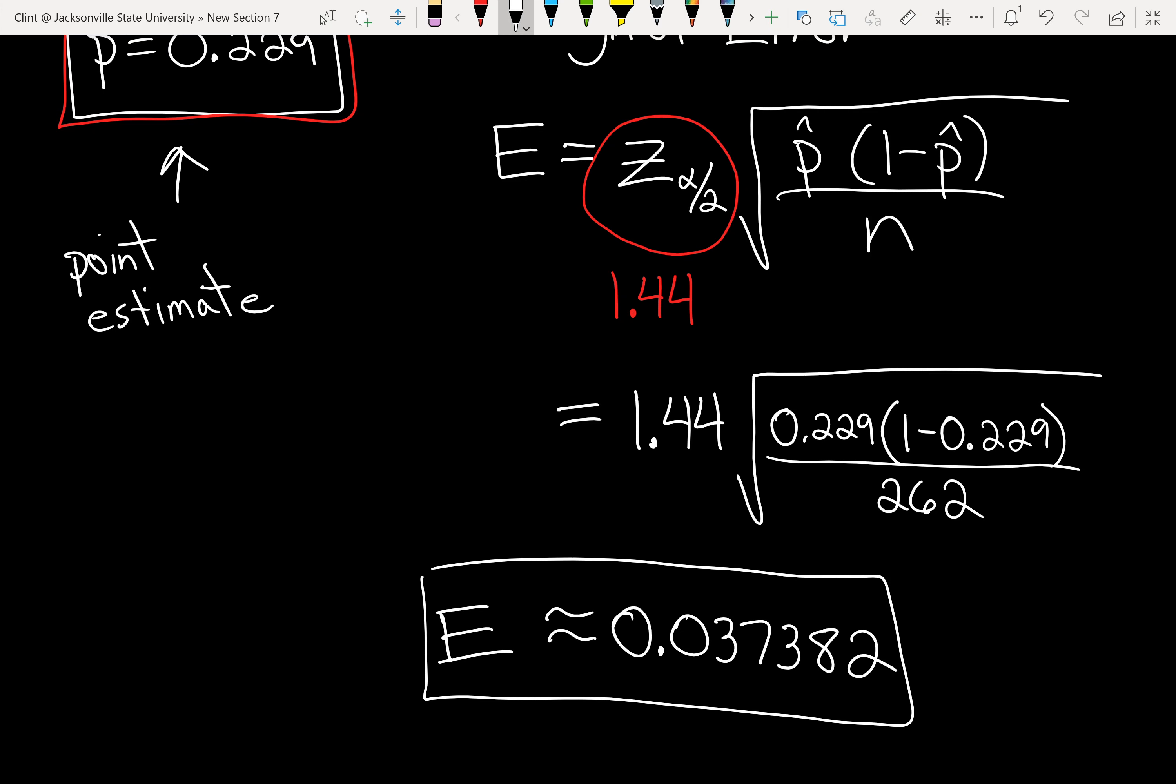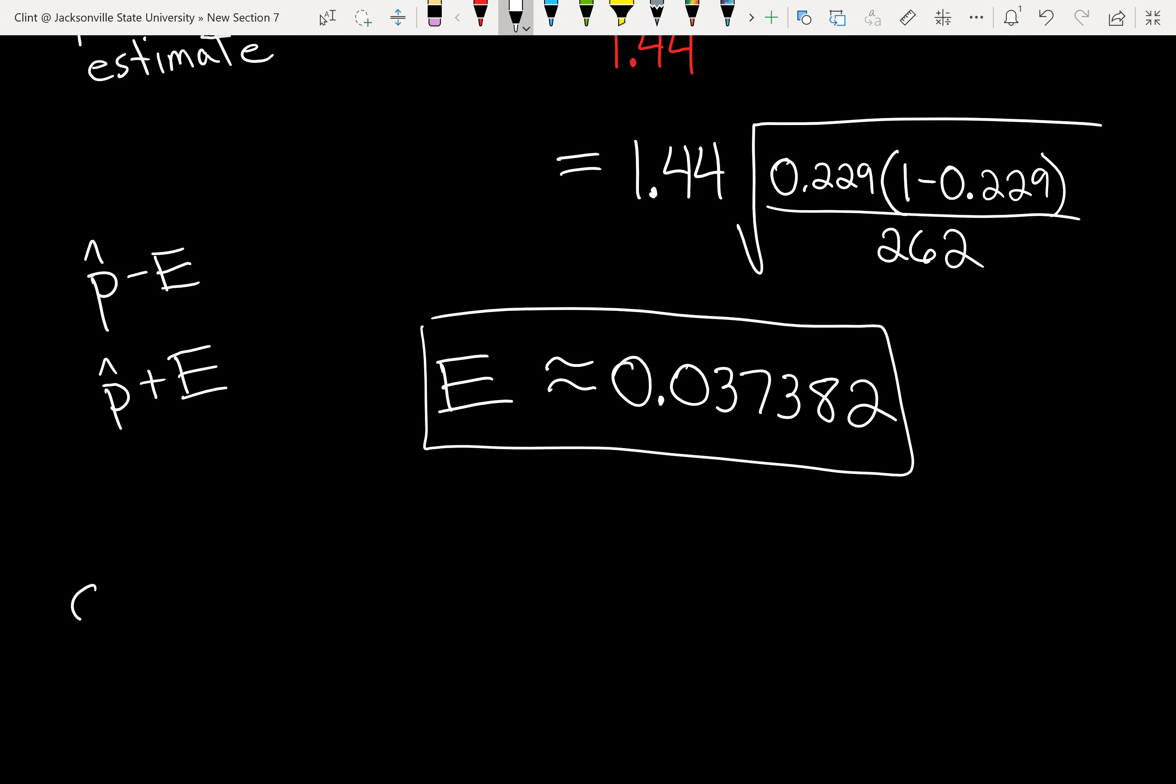So now we've got one more step, or two more steps if you want to count it that way. We need to take our point estimate and subtract the margin of error. And we need to take our point estimate and add the margin of error. This is just like what we did in the other sections here. So p-hat's 0.229. So we need 0.229 minus 0.037382. And it told us we could round our final answer to three decimal places.